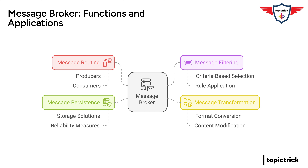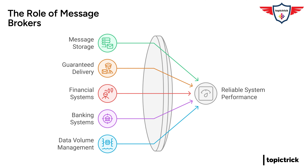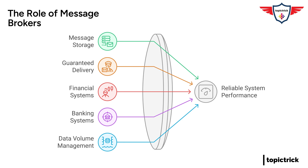Message brokers also provide features like message persistence — messages are stored safely even if the system crashes — and guaranteed delivery, meaning messages are delivered at least once even if there are network issues. They're widely used in financial systems where reliable and secure message delivery is critical. Think about stock exchanges where every millisecond matters, or banking systems where transaction data needs to be processed accurately and securely. Message brokers make sure these systems can handle massive volumes of messages with speed and reliability, and as the amount of data we generate keeps growing, they'll become even more crucial for building resilient, scalable, and responsive software systems.